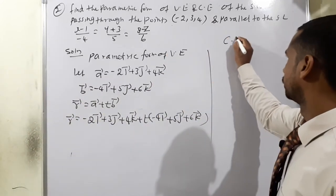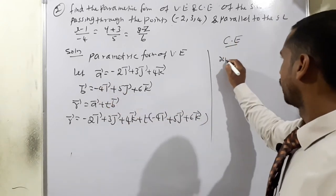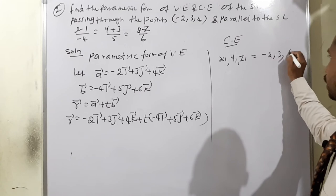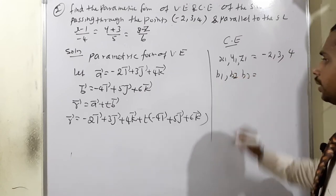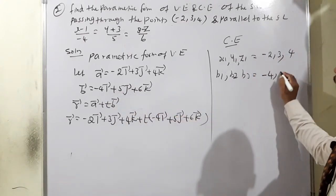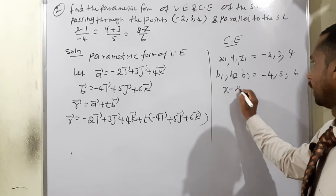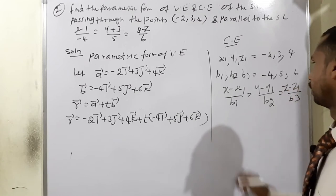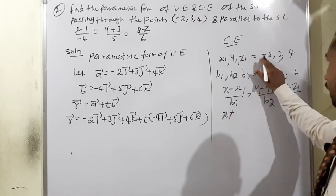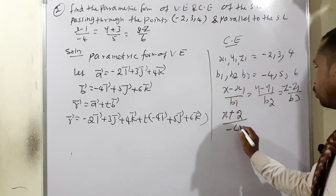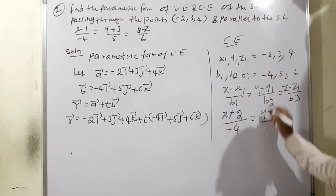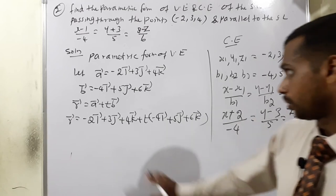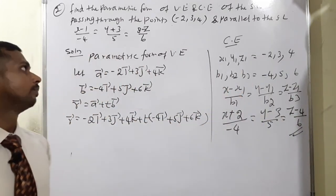Moving to the Cartesian equation. Here x1, y1, z1 equals negative 2, 3, 4, and b1, b2, b3 equals negative 4, 5, 6. Formula: x minus x1 by b1 equals y minus y1 by b2 equals z minus z1 by b3. Since x1 is negative 2, negative of negative gives positive, so: x plus 2 by negative 4 equals y minus 3 by 5 equals z minus 4 by 6. This is the answer for question number 2.